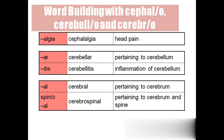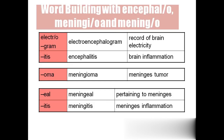'Cerebral' means pertaining or related to the cerebrum. 'Cerebrospinal' means pertaining to the cerebrum as well as the spine — for example, cerebrospinal fluid, which is the fluid present in the brain and spinal cord.